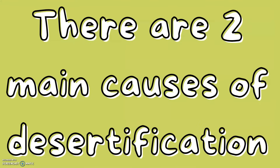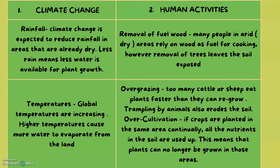There are two main causes of desertification. One is climate change. Climate change affects rainfall and is expected to reduce rainfall in areas that are already dry. Less rain means less water is available for plant growth. Climate change also means global temperatures will increase, and the higher temperatures will cause more water to evaporate from the land.